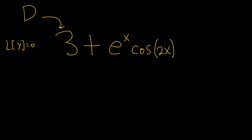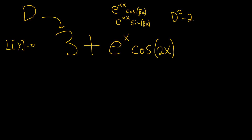In order to deal with this, there is a formula. So whenever you have e to the alpha x cosine beta x, or also e to the alpha x sine of beta x, whenever you have any of these, the annihilator for this is D squared minus 2 alpha D, plus alpha squared plus beta squared.